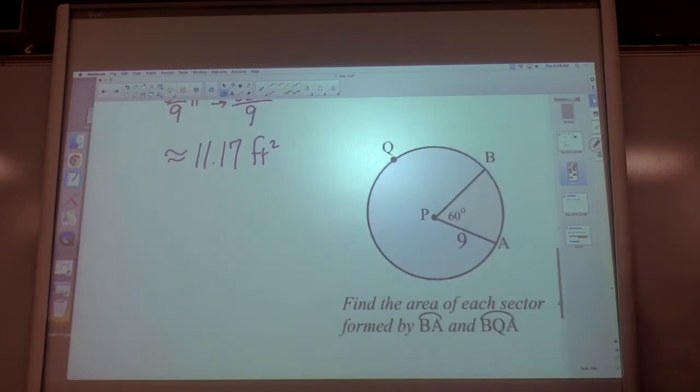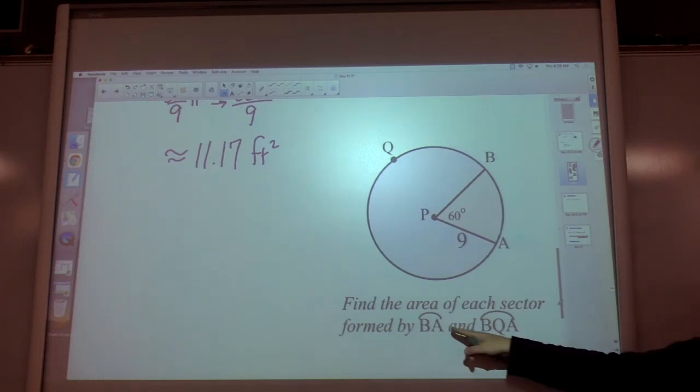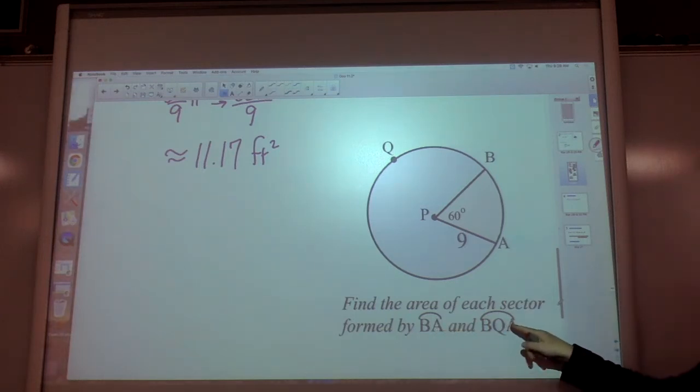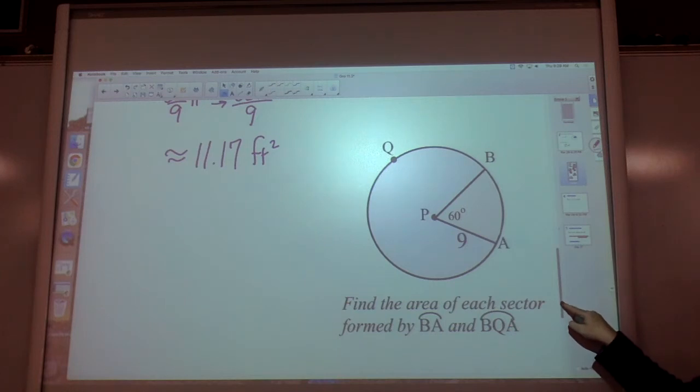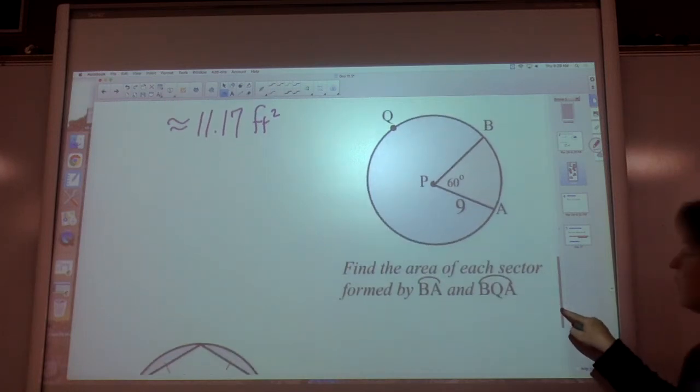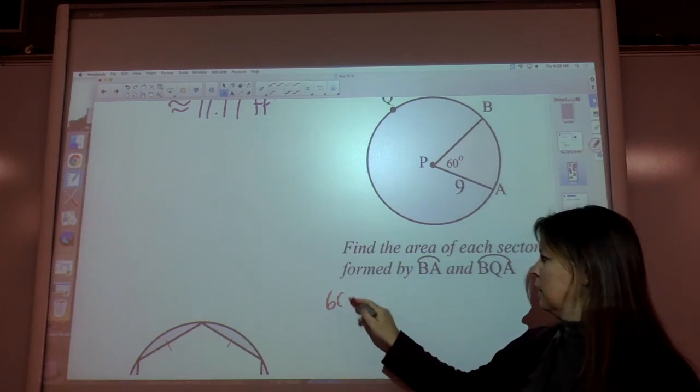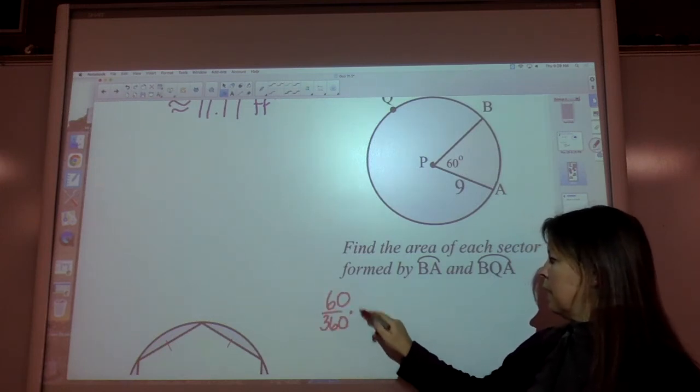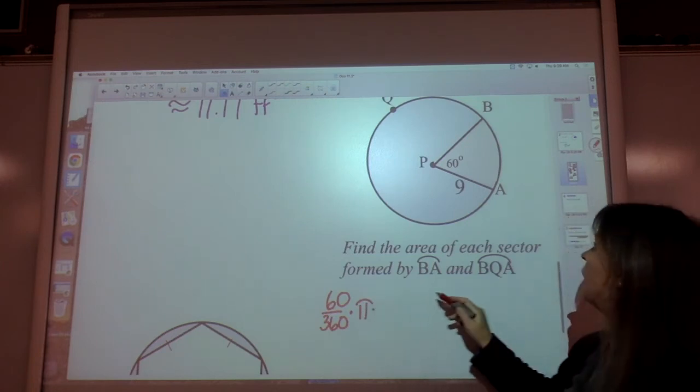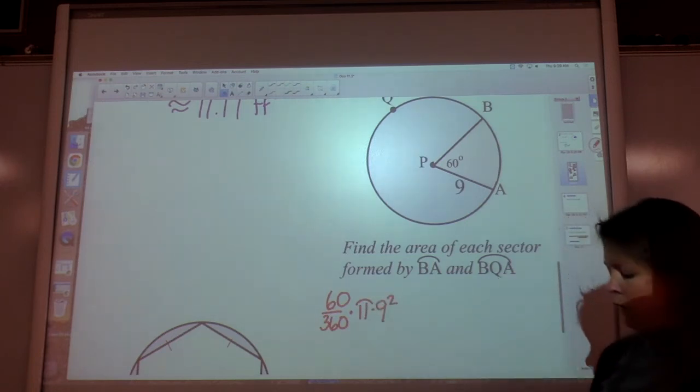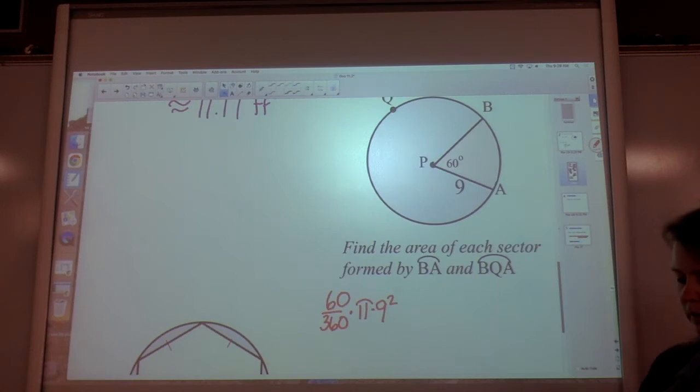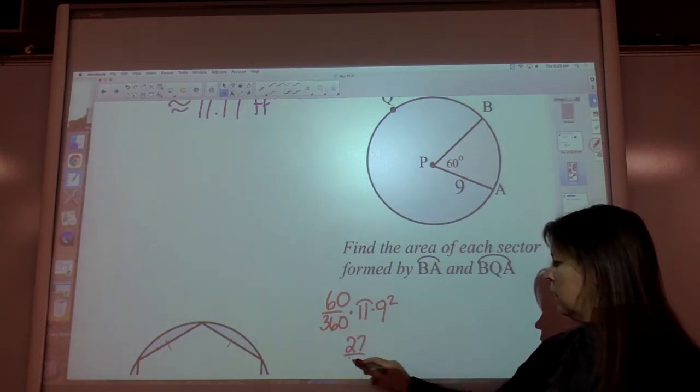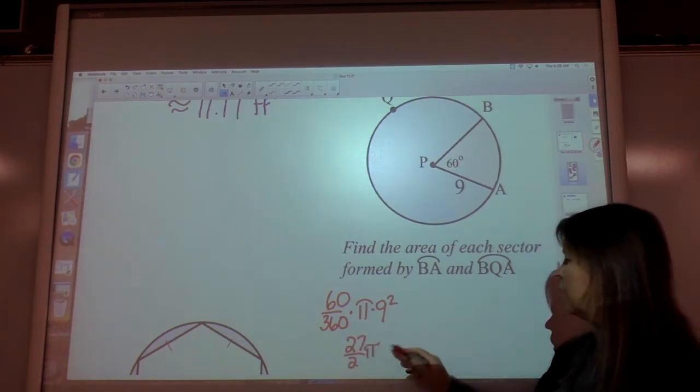Find the area of each sector. There's a pink one, formed by minor arc BA, and there's a purplish one, formed by arc BQA. We'll first find the first one at 60 over 360 times π times radius of 9 squared. We'll go with 60 over 360, or 1 sixth, times 9². Gives us a fraction of 27 over 2 π.